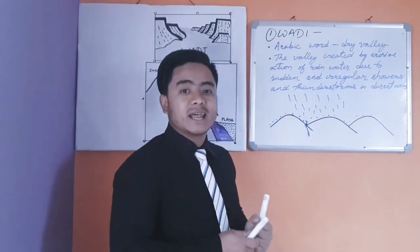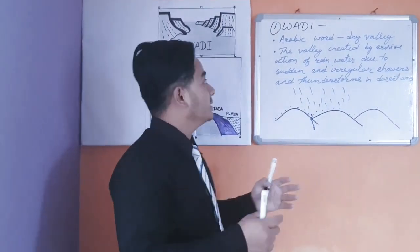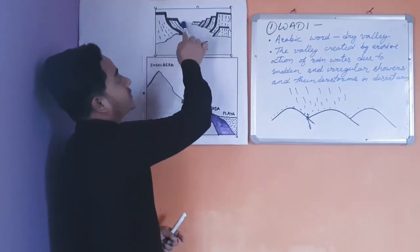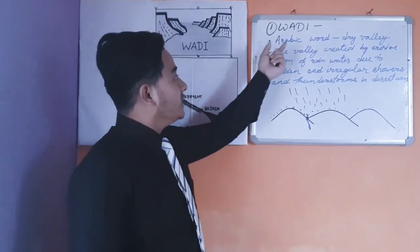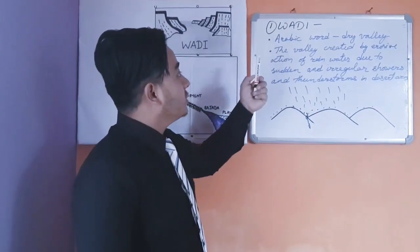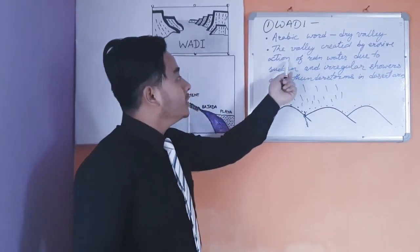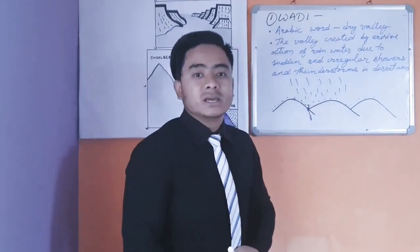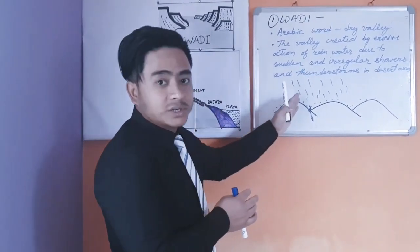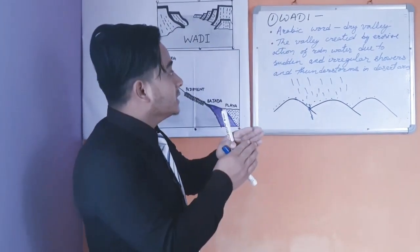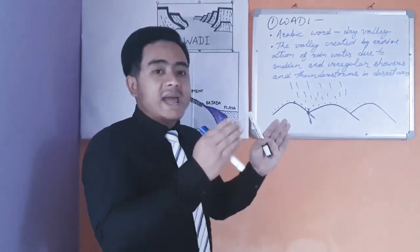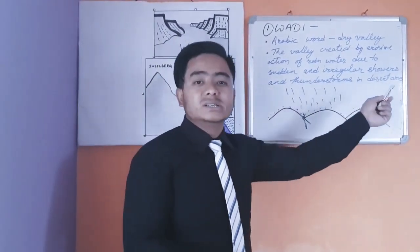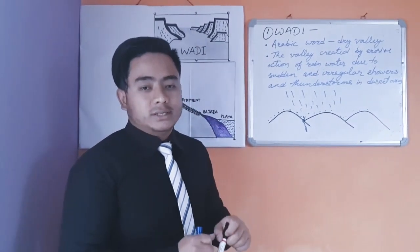Wadi is derived from the Arabic word meaning 'dry valley.' You can see in the diagram a dry valley formed between sand dunes — that dry valley is wadi. The definition: wadi is the dry valley created by the erosive action of rainwater due to sudden and irregular showers and thunderstorms in desert areas.